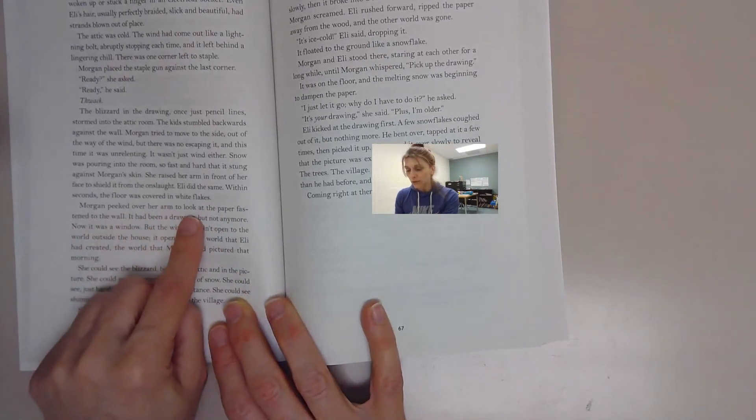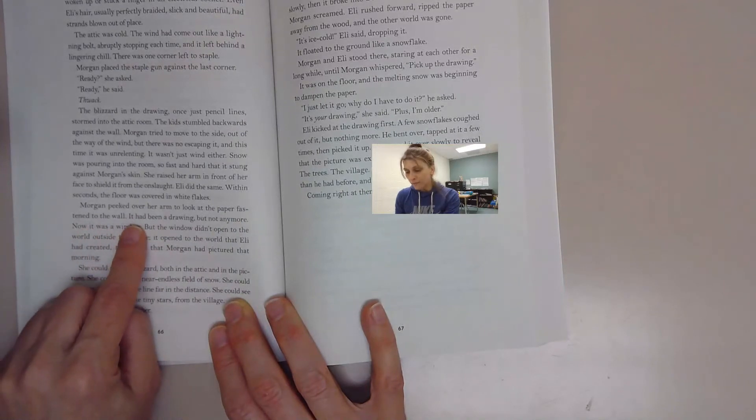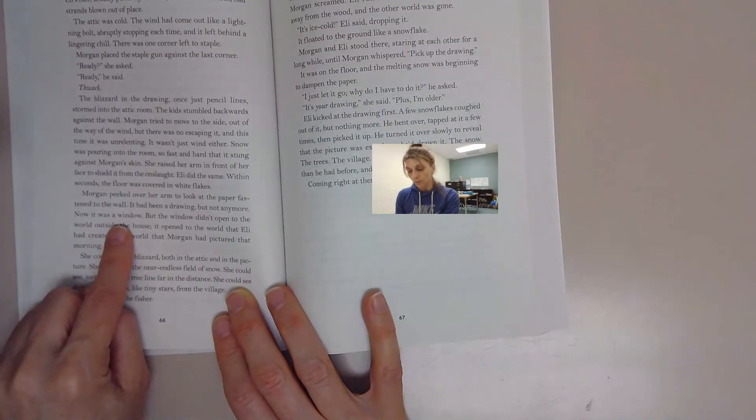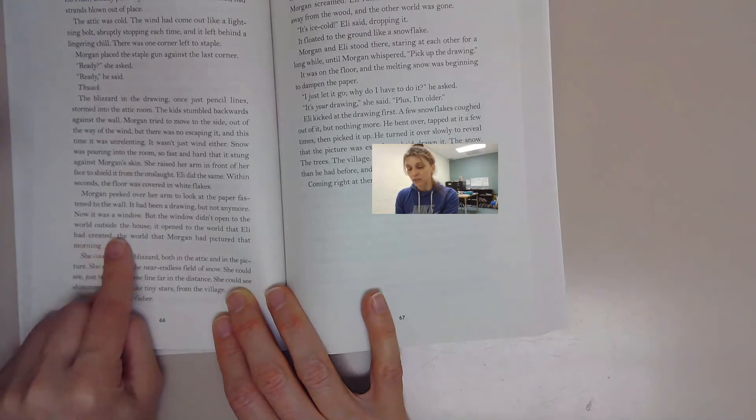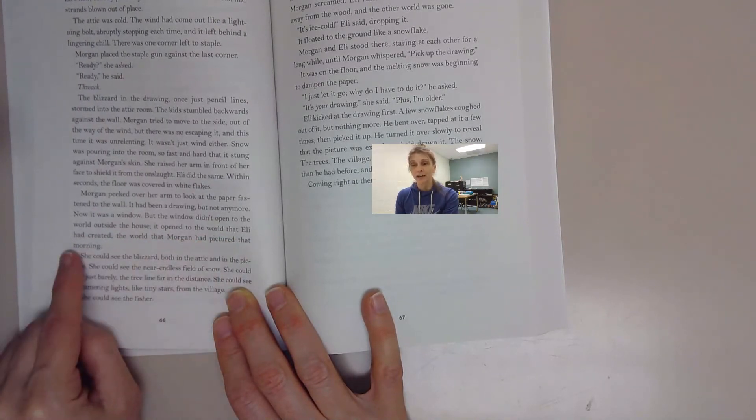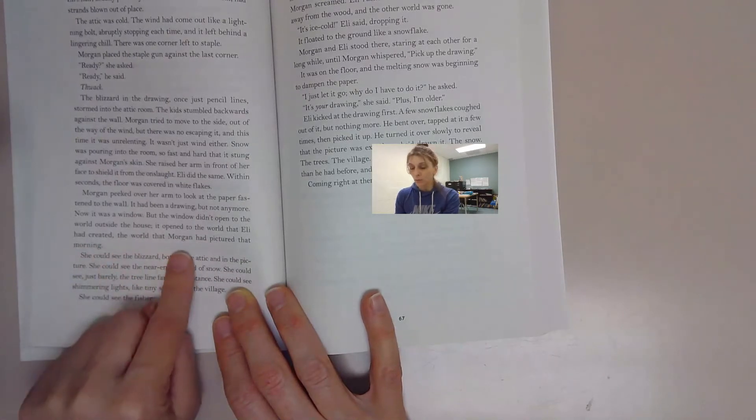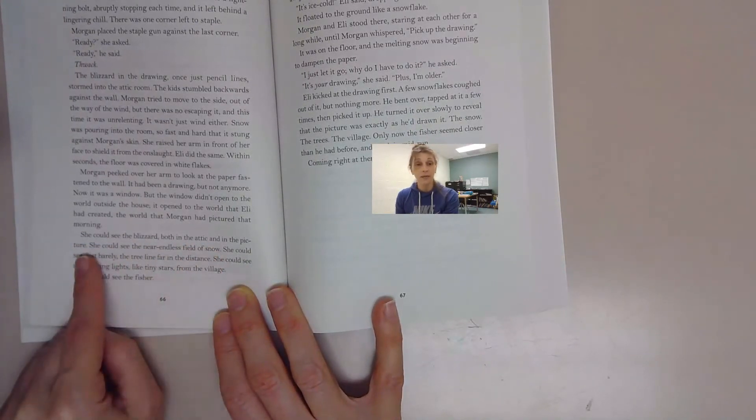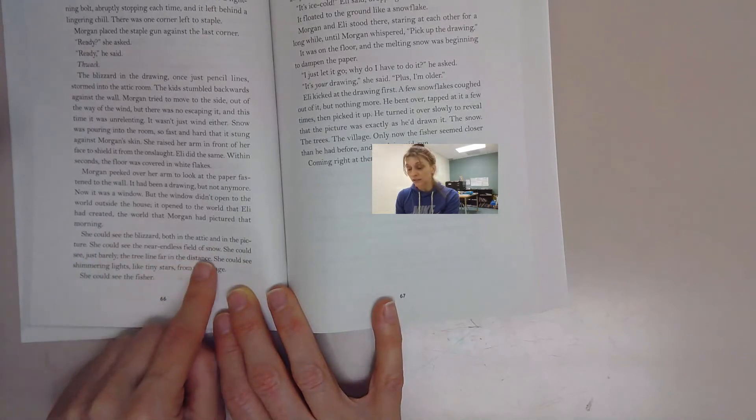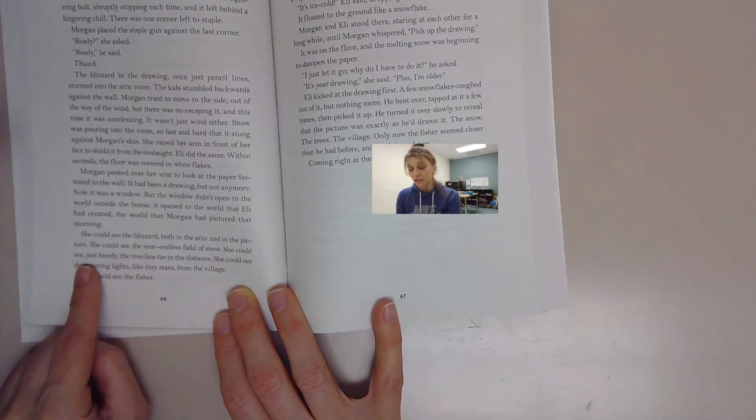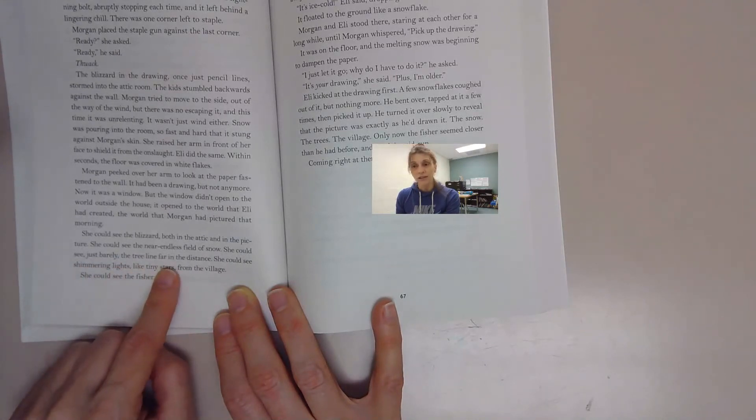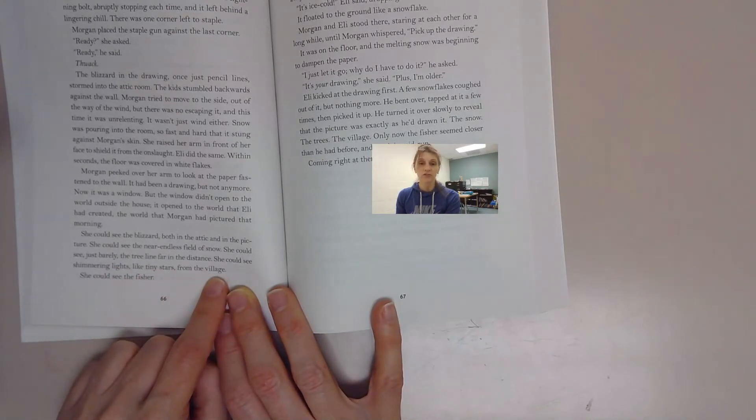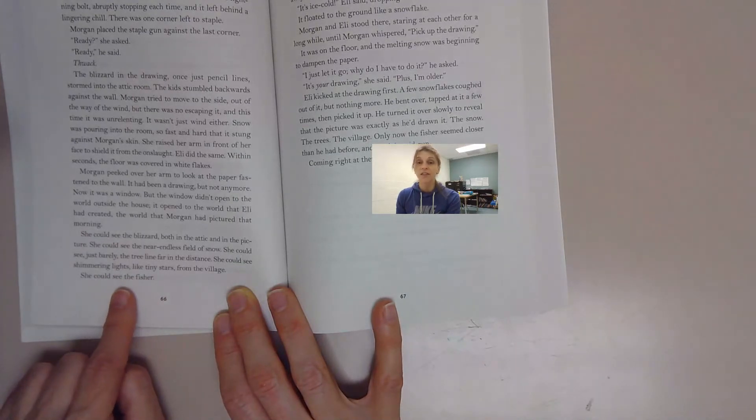Morgan peeked over her arm to look at the paper fastened to the wall. It had been a drawing, but not anymore. Now it was a window, but the window didn't open to the world outside the house. It opened to the world that Eli had created, the world that Morgan had pictured that morning. She could see the blizzard, both in the attic and in the picture. She could see the near endless field of snow. She could see, just barely, the tree line far in the distance. She could see shimmering lights like tiny stars from the village. She could see the fisher.